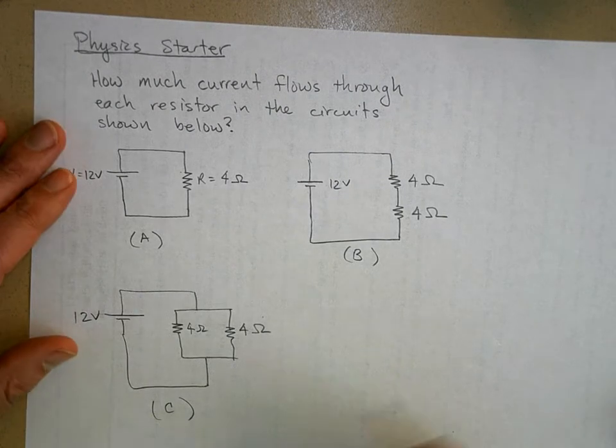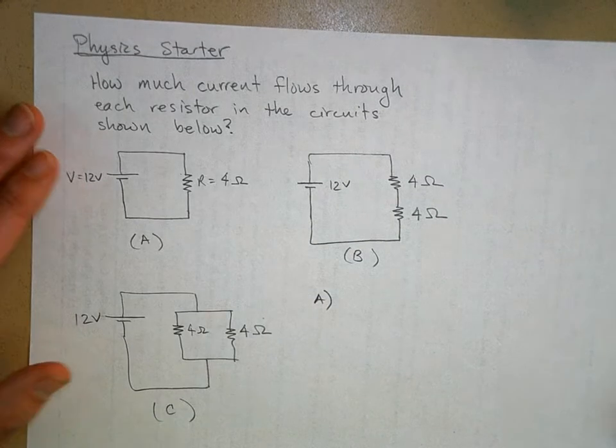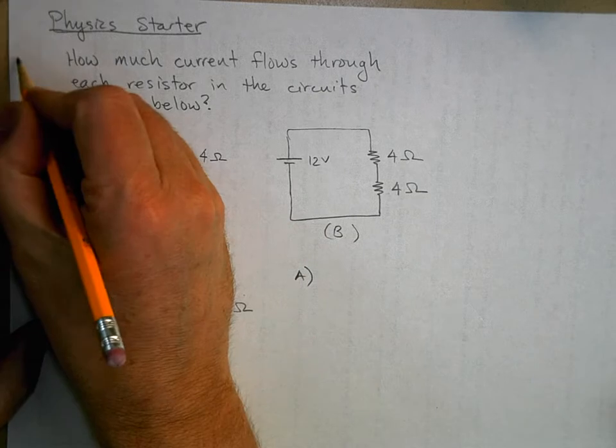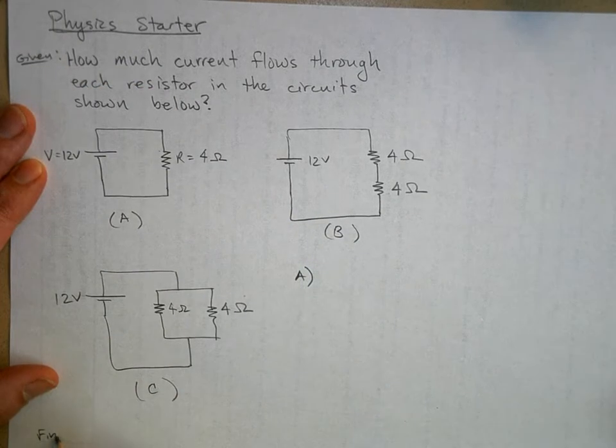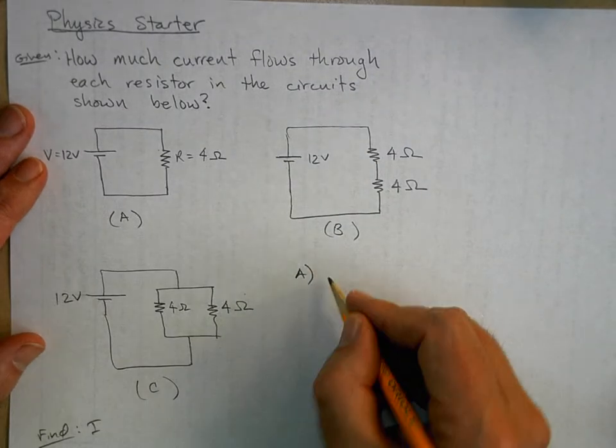Okay, so for part A, I'll just write the solutions here, not really using given, find, and solve. I guess I should - this is given, and then find is I for each resistor, so let's go ahead and solve it.